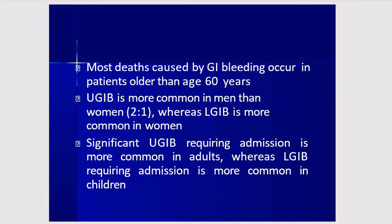Most deaths caused by GI bleeding occur in patients older than 60. Upper GI bleeding is more common in men than women in a ratio of 2 to 1, whereas lower GI bleeding is more common in women.